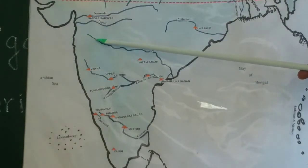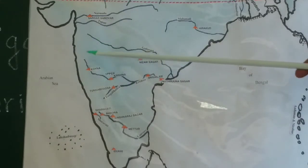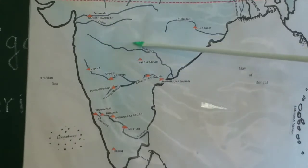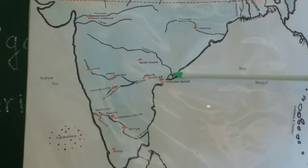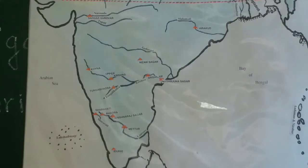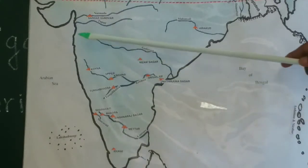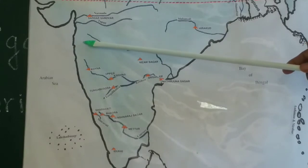Near Nasik, at Trambaka. Then it is joined by many other tributaries and flows towards east, and then it joins the Bay of Bengal. Next we have Krishna river. Krishna too takes birth near Nasik — actually at Mahabaleshwar.